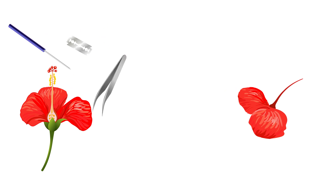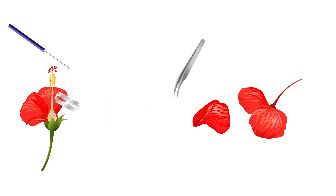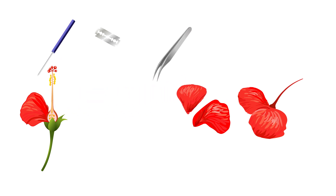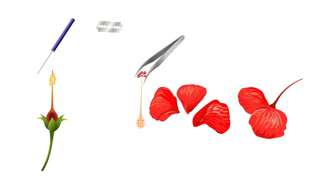Using forceps and needle, tear off the petals longitudinally without damaging the carpel. You will also need a blade in addition to the forceps. Separate the individual parts and place them out on paper using forceps. Take out the stigma along with the style from the carpel.